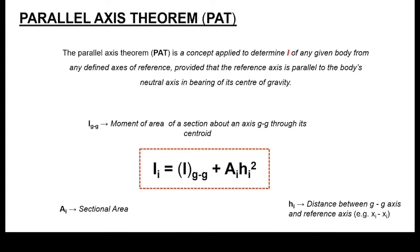IGG is basically characterizing the neutral axis in terms of how a given cross-sectional profile has been segmented — it's the individual second moments of area for the individual elements that constitute the composite form. A represents the area of each segment that constitutes the composite form, and h is basically the distance of the segment's neutral axis to that of the global neutral axis.